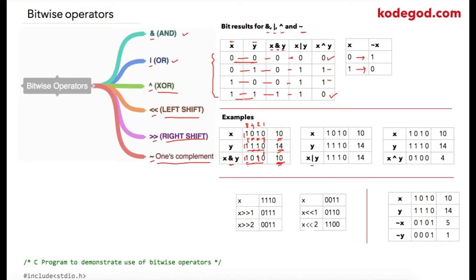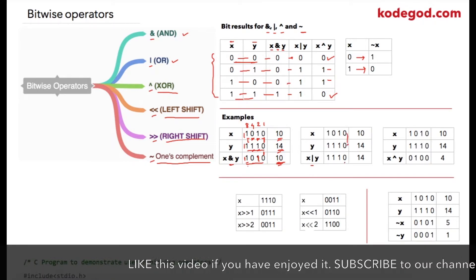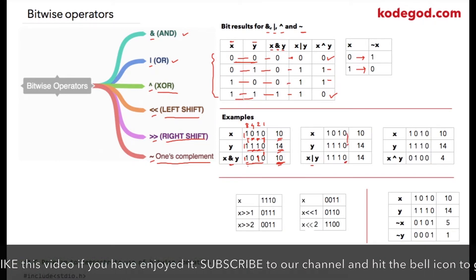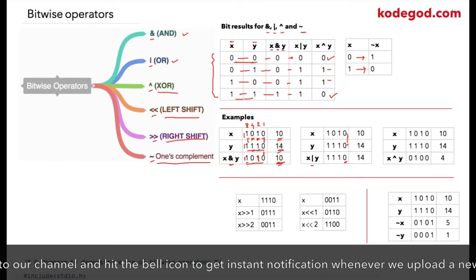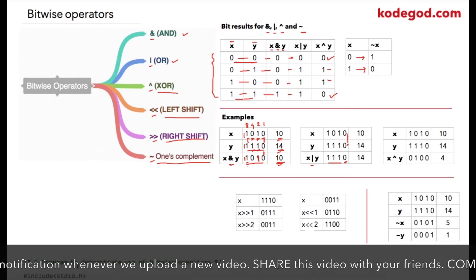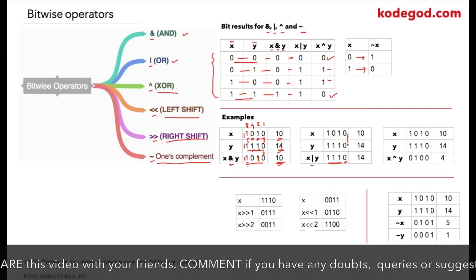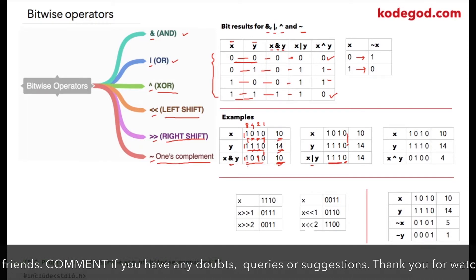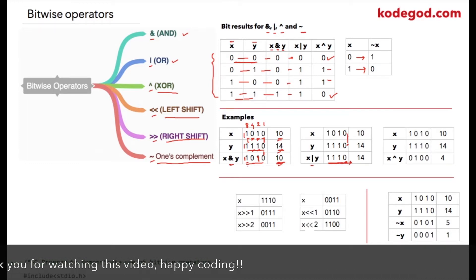Now let us check the same with the OR operator. For OR, only when both bits are zero do we get zero — and only in this case are both numbers zero, so we have zero here. In all the remaining columns there is at least one one, so we get one in all those cases. Our result is 1110, which is equivalent to decimal value 14.